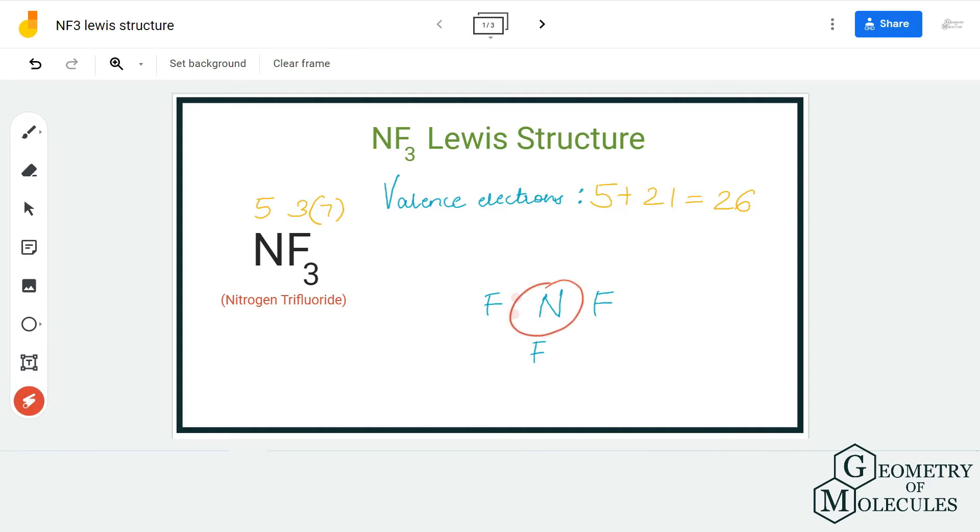All the fluorine atoms will be arranged around it like this, because fluorine is more electronegative than nitrogen. Nitrogen is the least electronegative atom, so we place it in the center. Now we are going to place a pair of electrons to show bonds between nitrogen and fluorine atoms.